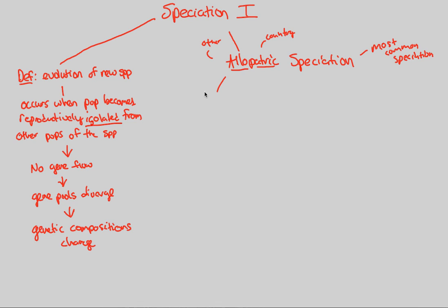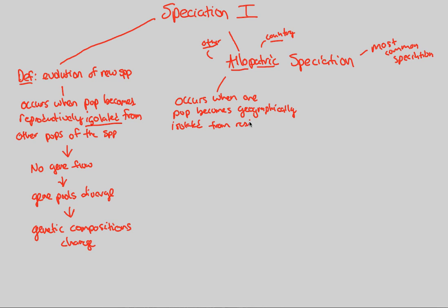Allopatric speciation is a specific speciation event that occurs because of another homeland — another country playing into the equation. Specifically, allopatric speciation occurs when one population becomes geographically isolated from the rest of the species. Because we're trying to evolve a new species, we have to reproductively isolate them. A good way to prevent gene flow and create divergence of gene pools is to separate them geographically.